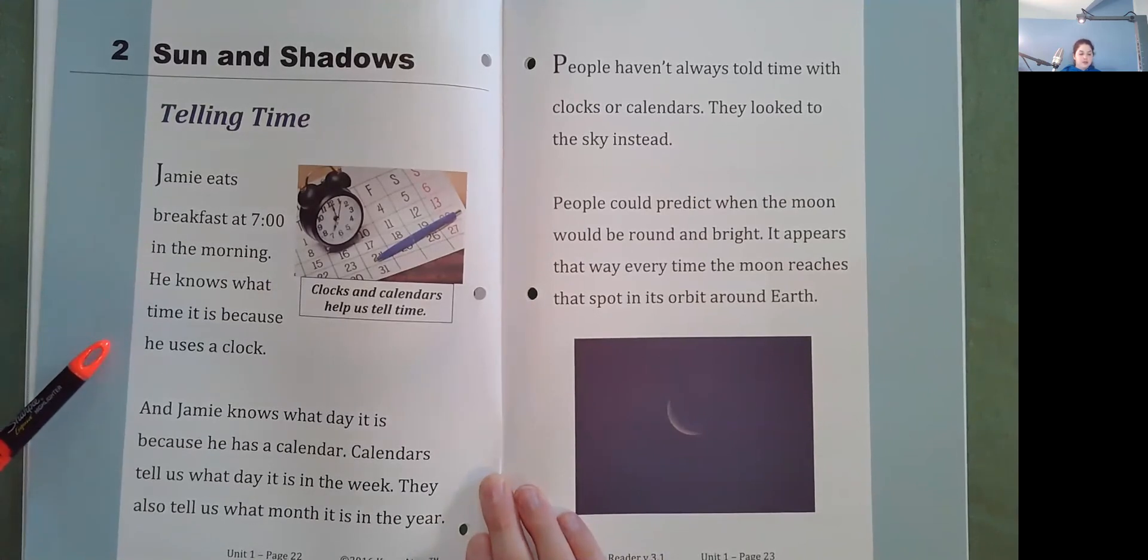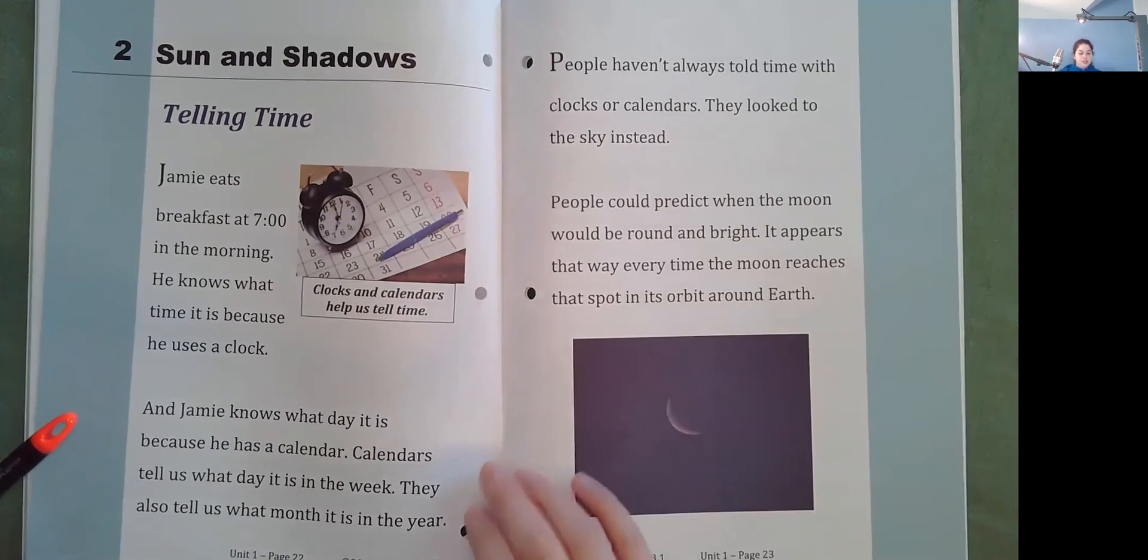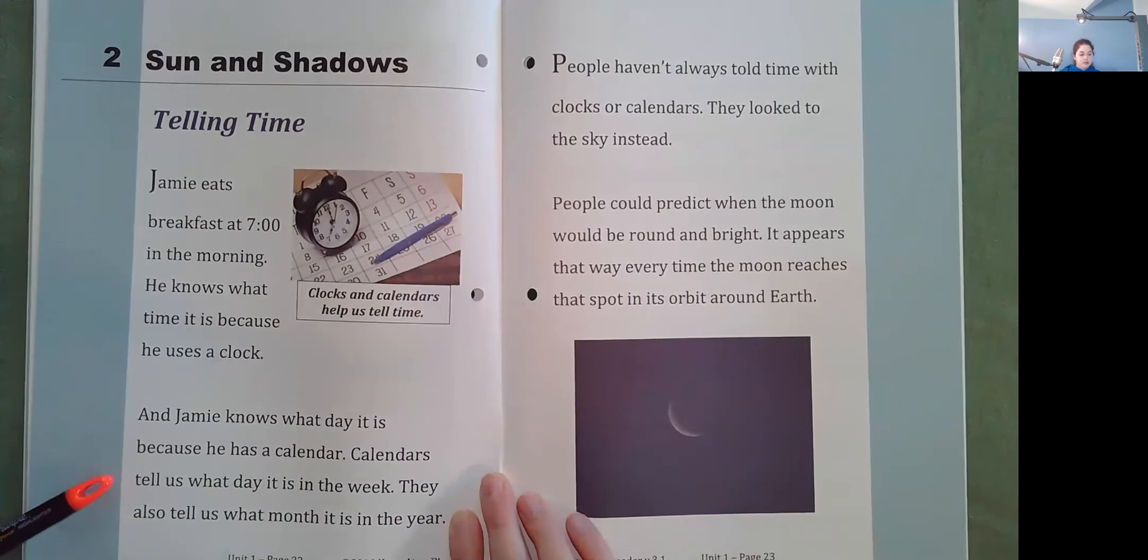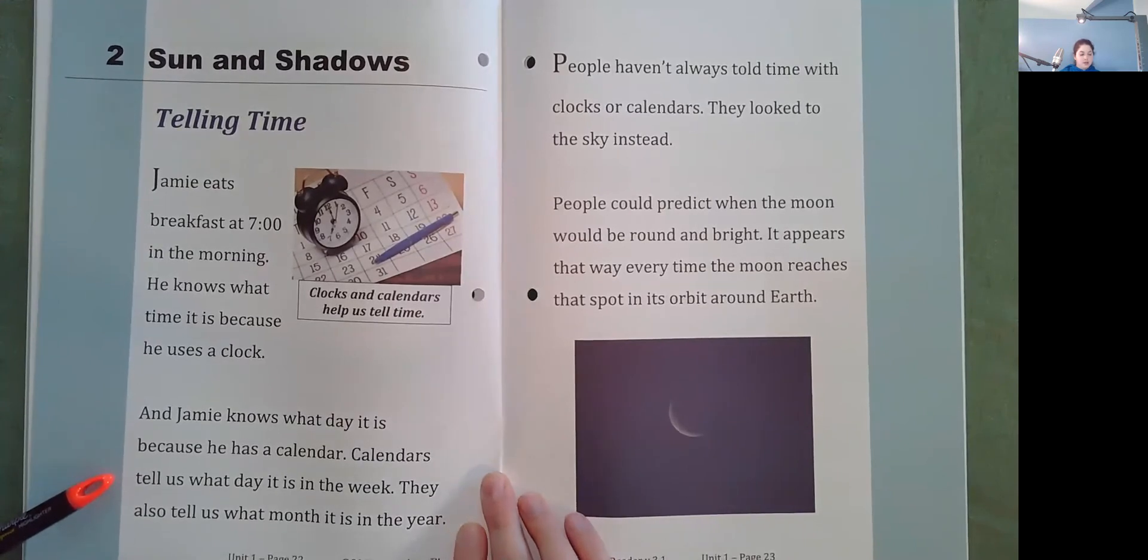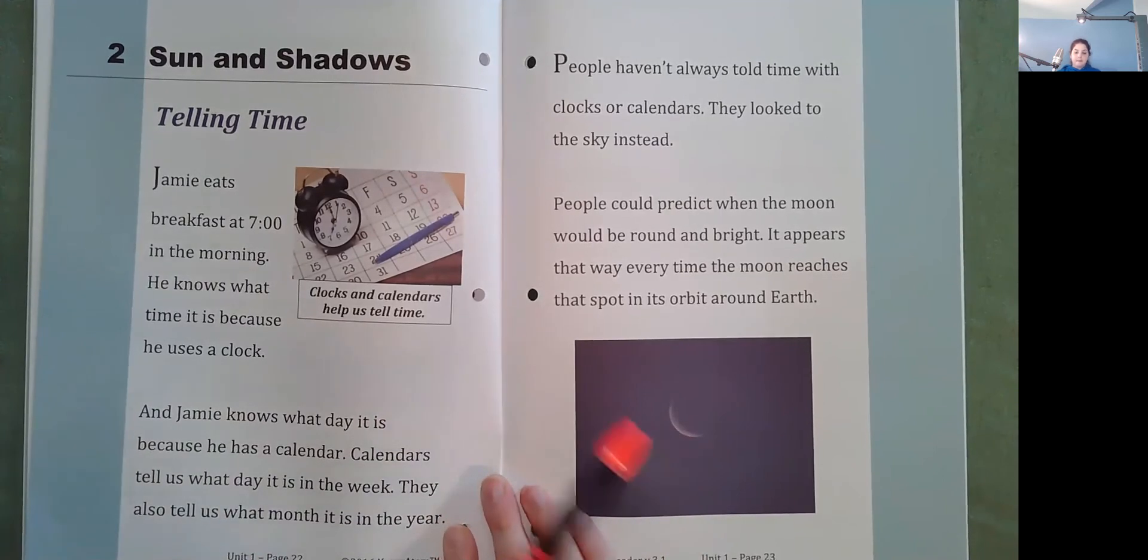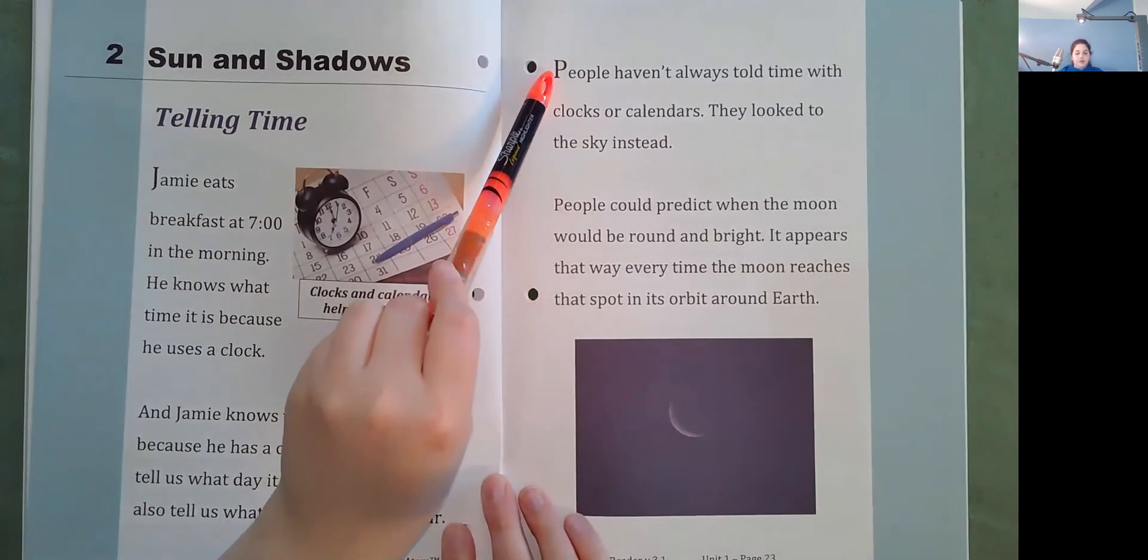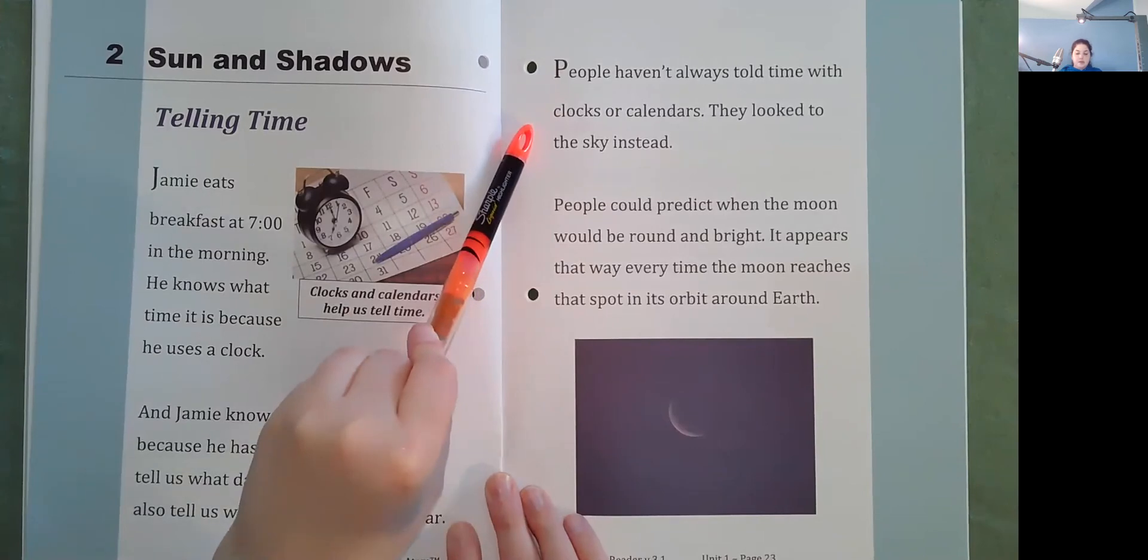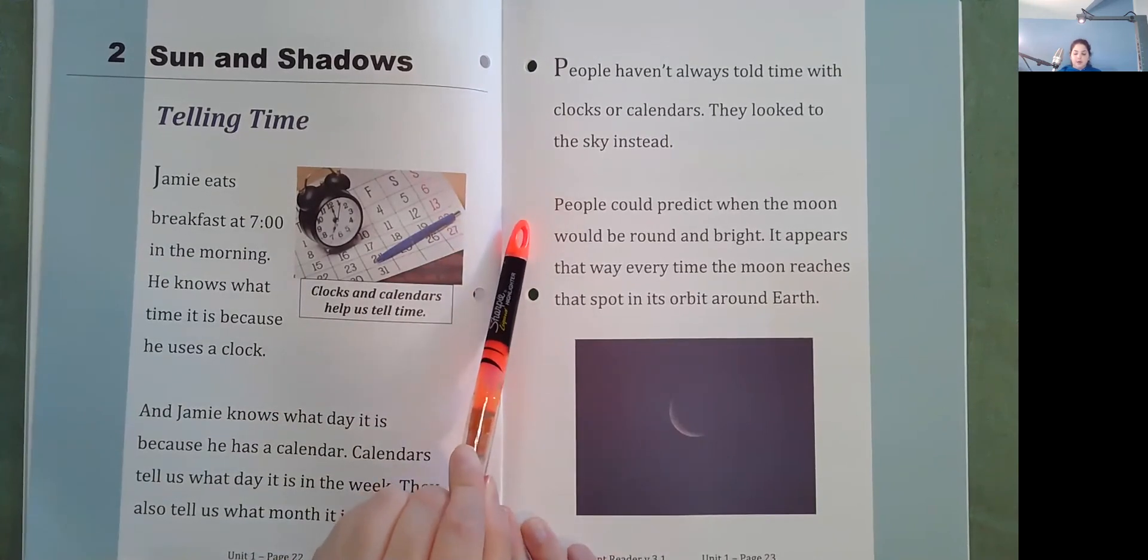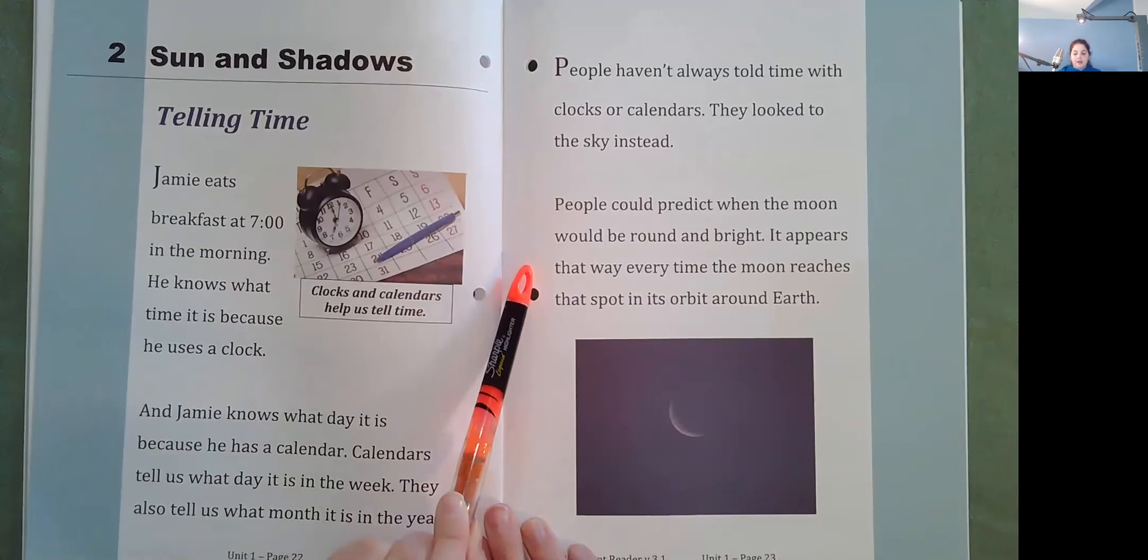Jamie knows what time it is because he uses a clock, and he knows what day it is because he has a calendar. Calendars tell us what day it is in the week. They also tell us what month it is in the year. Clocks and calendars help us tell time. People haven't always told time with clocks or calendars. They looked to the sky instead.